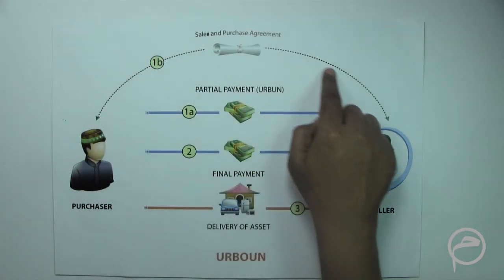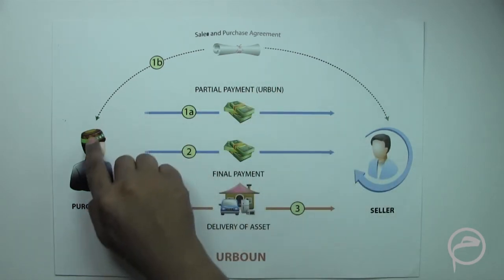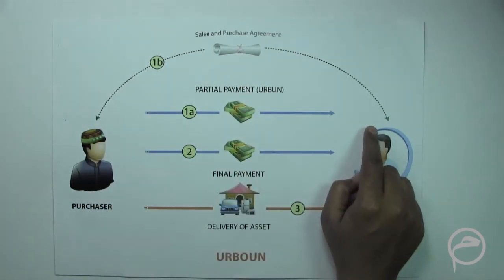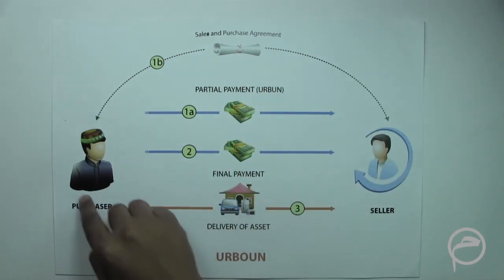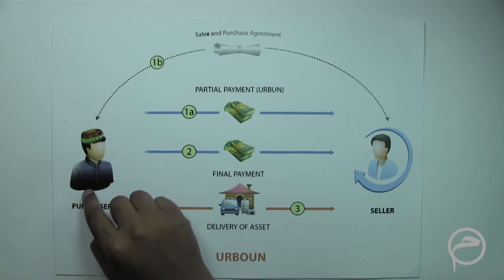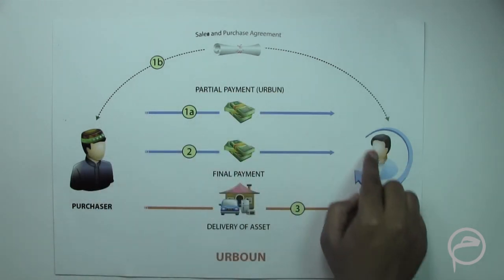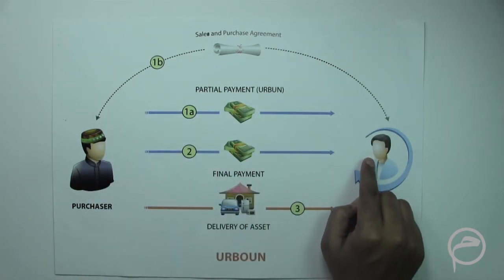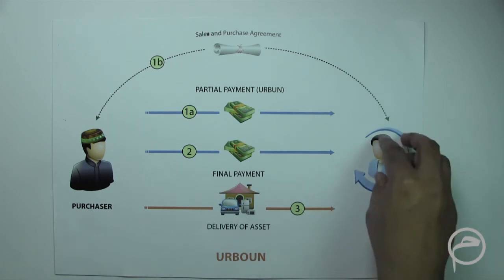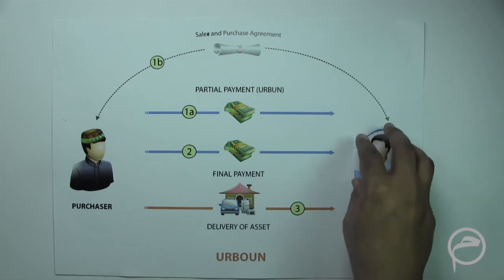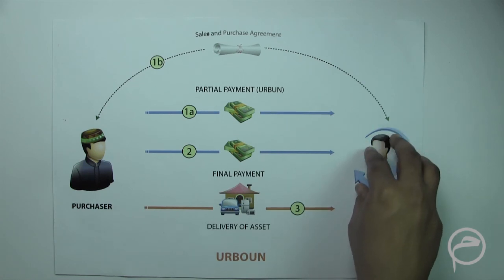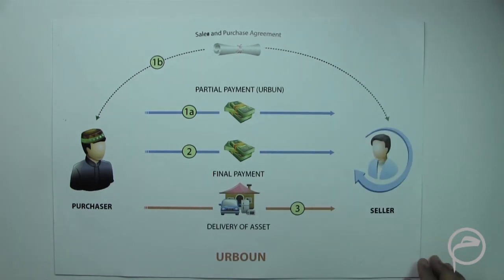After three days, if the purchaser decides to purchase the asset, they pay the balance of 90 dollars, a proper sale and purchase agreement happens, and the assets are delivered to the purchaser by the seller. However, if the purchaser decides not to go ahead with the sale and purchase agreement, the seller keeps the 10 dollars paid as the urboon amount. Basically, urboon is an Islamic option.